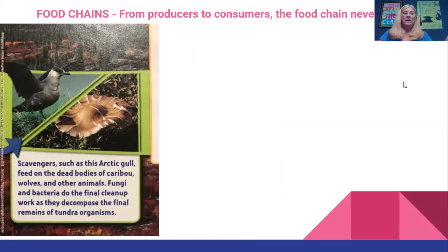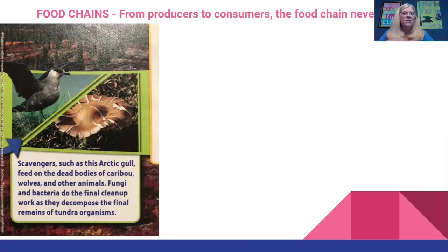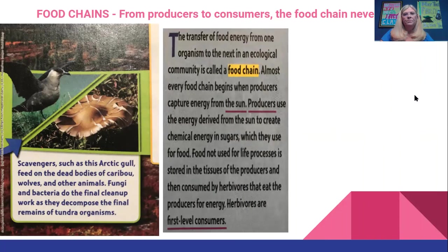Scavengers like the arctic gull feed on the dead bodies of caribou, wolves, and other animals. Fungi and bacteria do that final cleanup in the food chain — from the reindeer moss to the caribou to the wolves. The gulls and the fungi and bacteria decompose the final remains of a tundra organism. The transfer of food energy from one organism to the next in an ecological community is called a food chain.